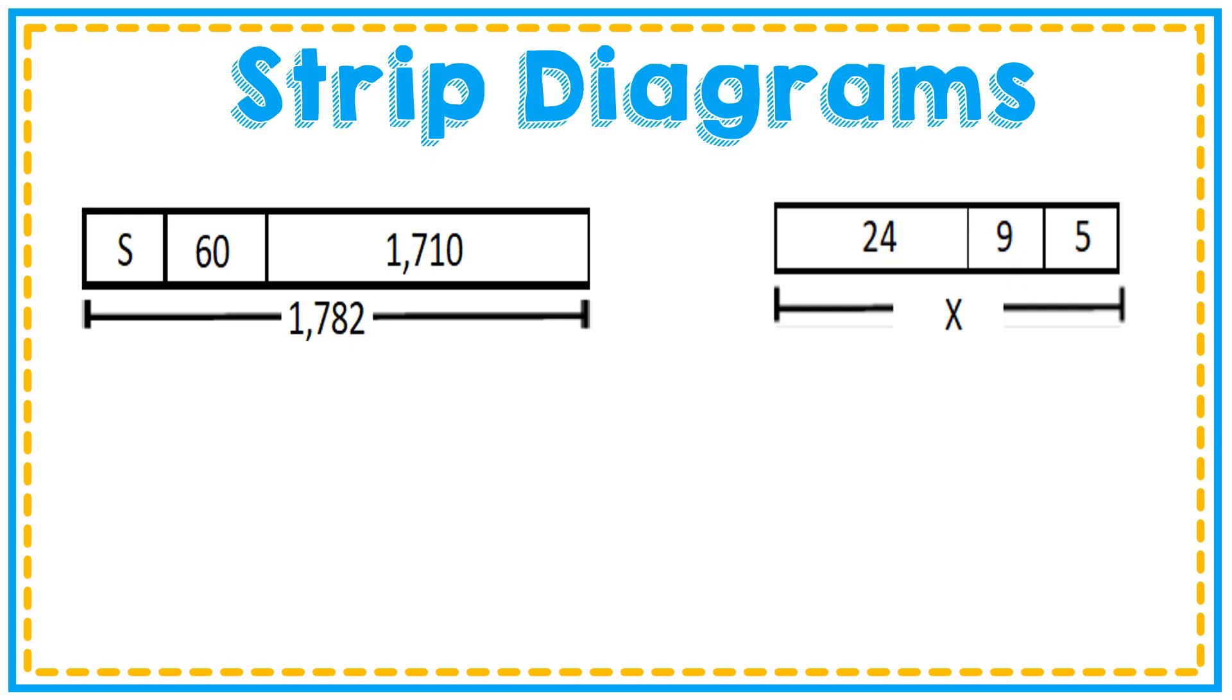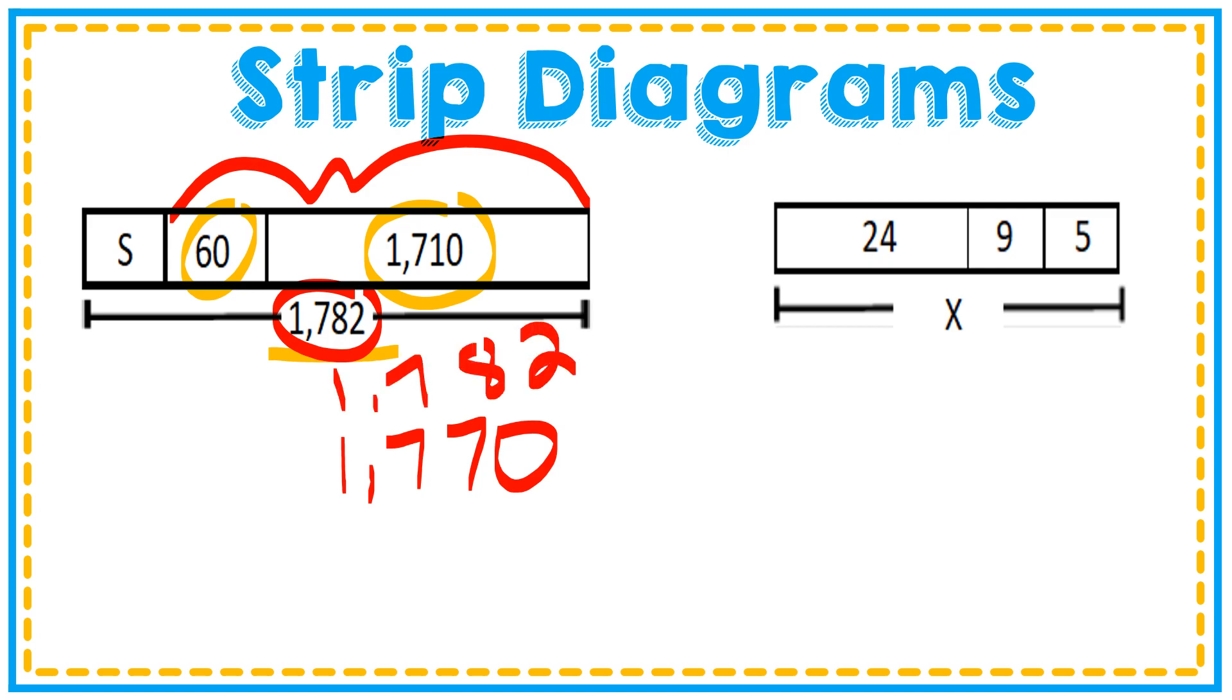Let's look at some examples of strip diagrams with variables. As you can see in your first one, my whole is 1782. My parts are 60 and 1710. I can use some mental math on this. I'm going to add these two. When I add them up, I get 1770. I'm going to take my whole 1782 and I'm going to subtract to find my variable, to find my missing part. When I take these numbers and subtract them, I get a difference of 12. So S equals 12.